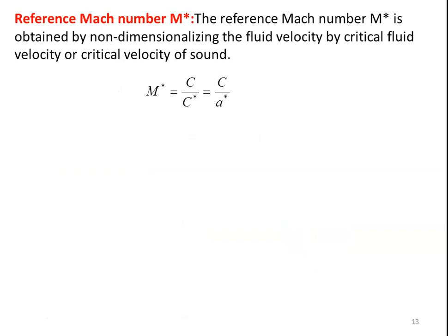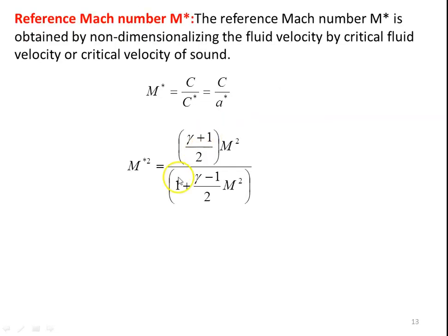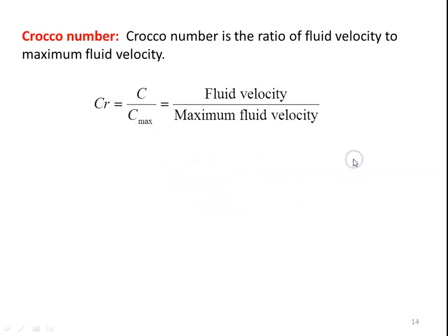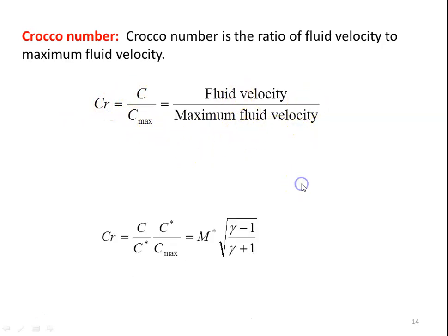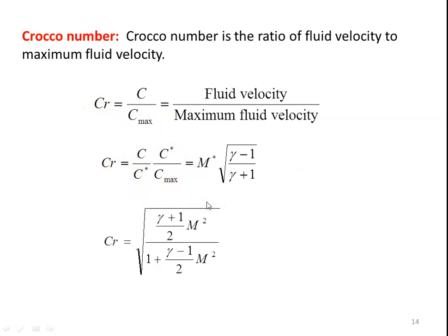The reference Mach number M* should not be confused with the critical Mach number. The reference Mach number M* = C/C* = C/A*, and M*² = (γ+1)/2 · M² / (1 + (γ-1)/2 · M²). The Crocco number is another non-dimensional reference velocity in gas dynamics calculations, defined as C/Cmax (fluid velocity divided by maximum fluid velocity). Substituting the two values, the Crocco number equals √((γ+1)/2 · M² / (1 + (γ-1)/2 · M²)). These are all the reference velocities for gas dynamics calculation.